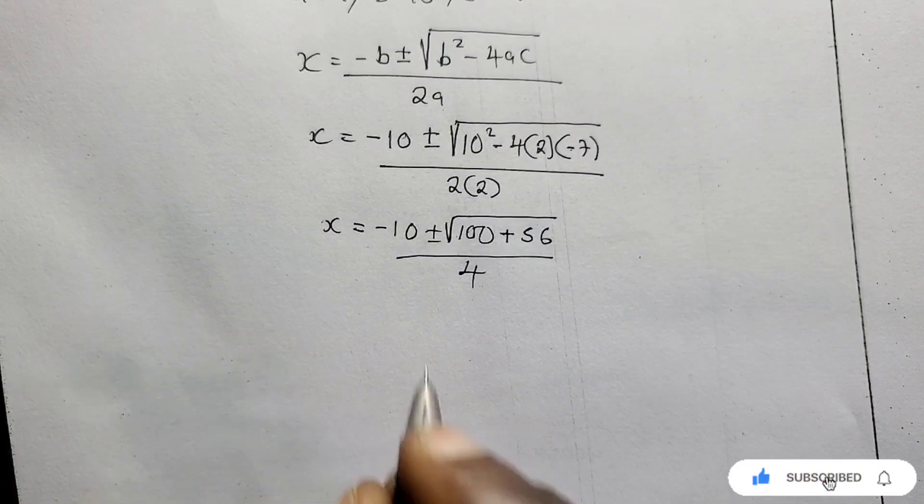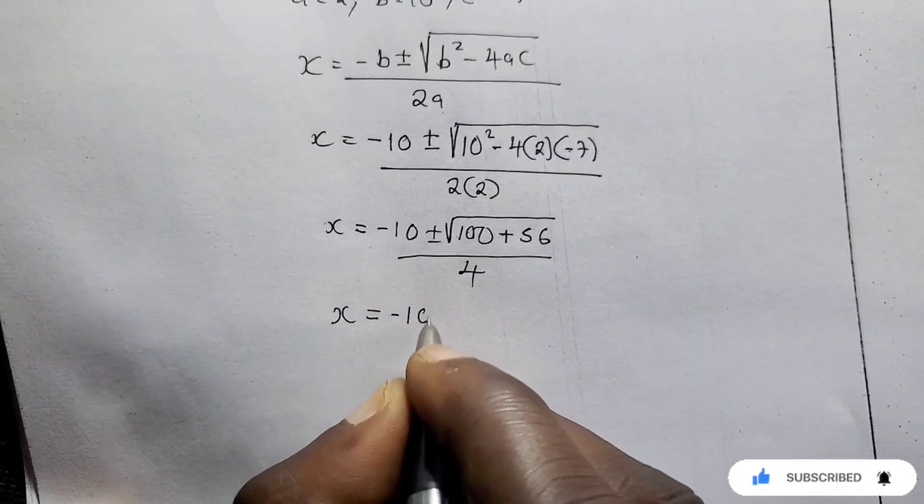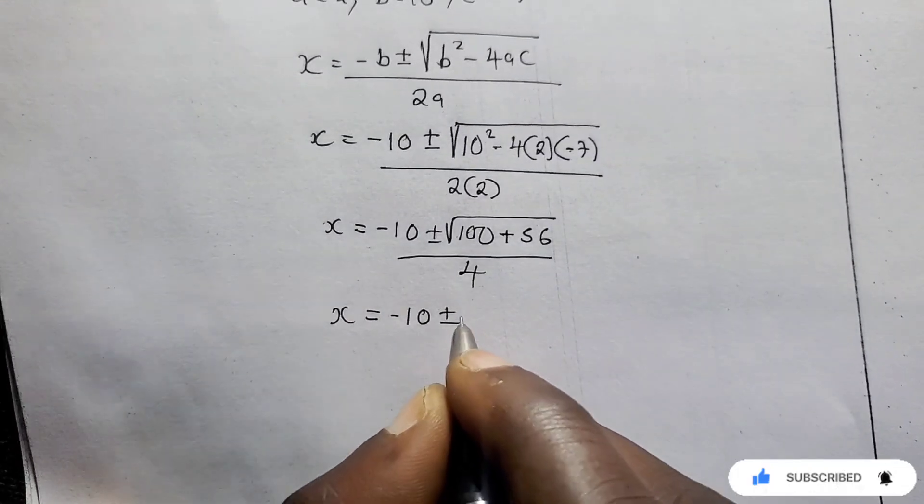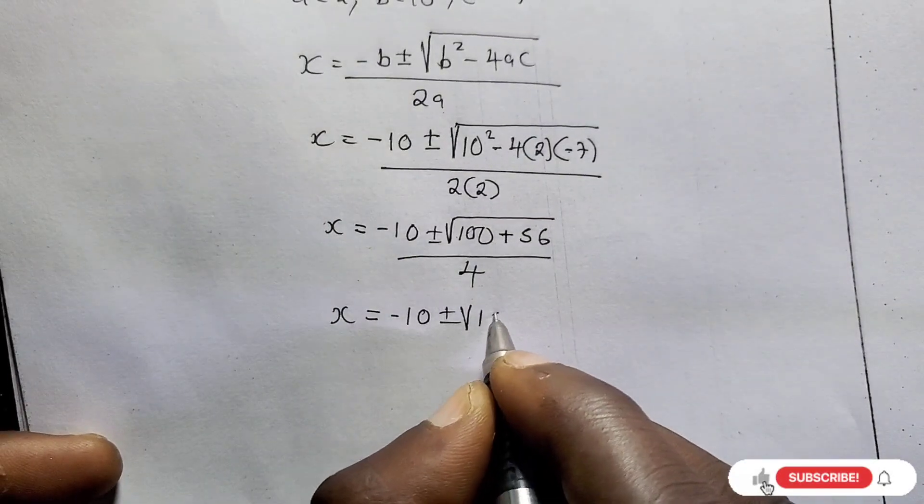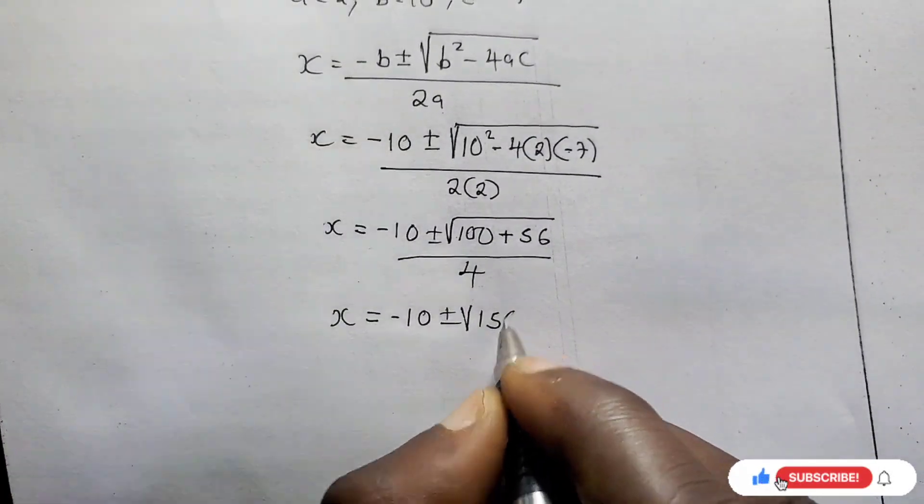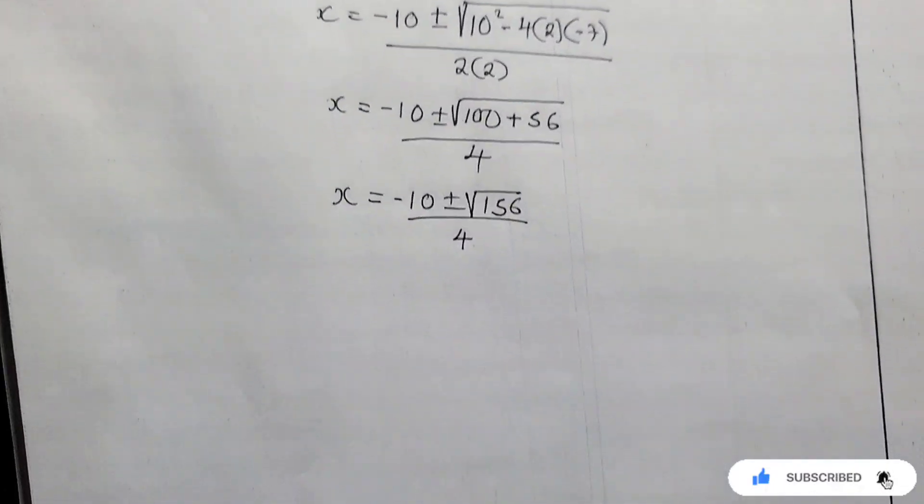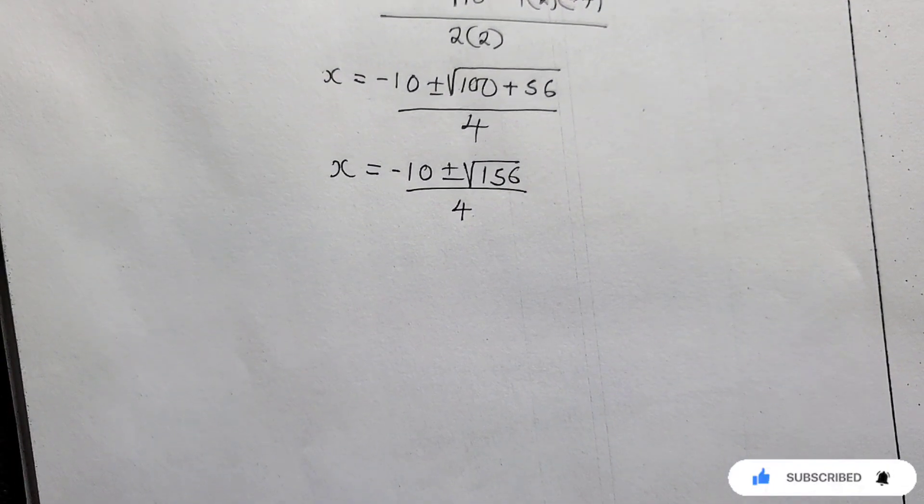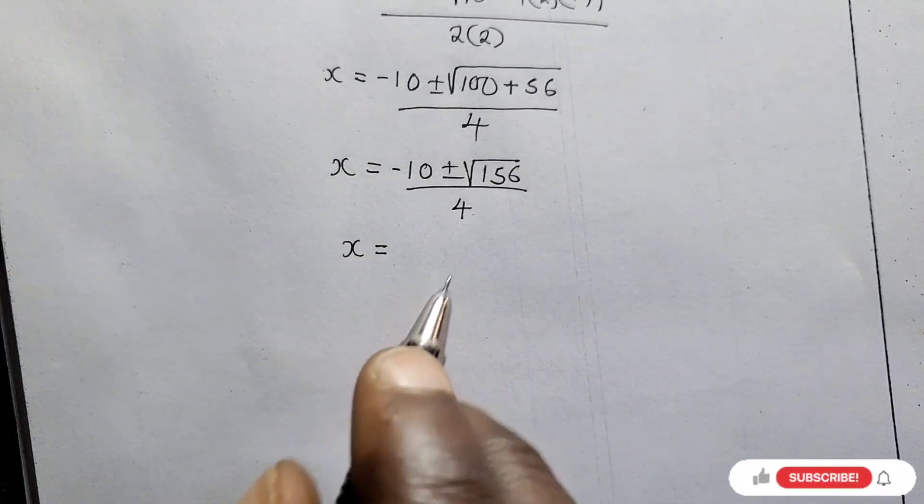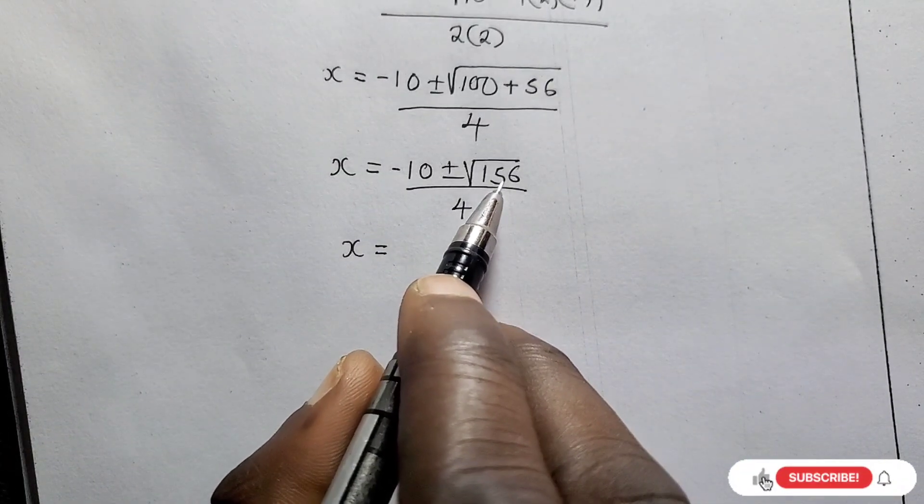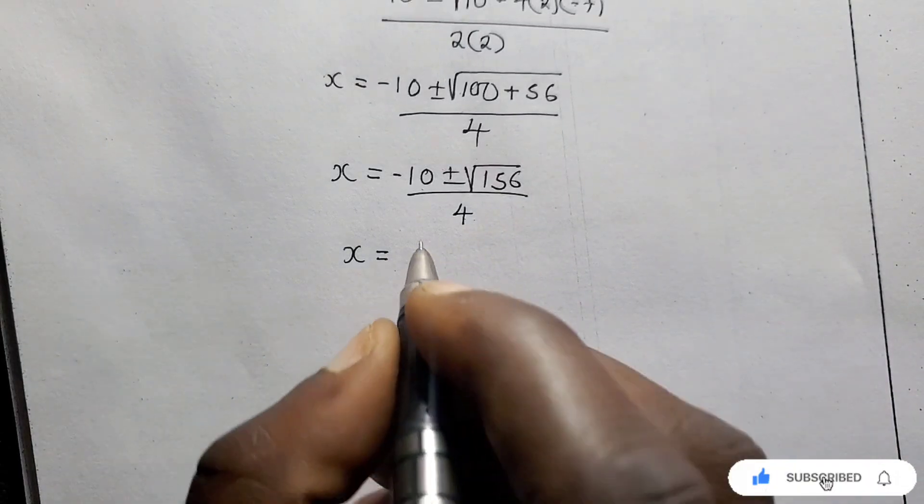Then we go to the next step. Next step. X equals negative 10 plus or minus the square root of 100 plus 56 is 156 over 4. Slow but sure. X equals, now you're going to deal with, you can't divide here. We're going to deal with this. So this is where you split.